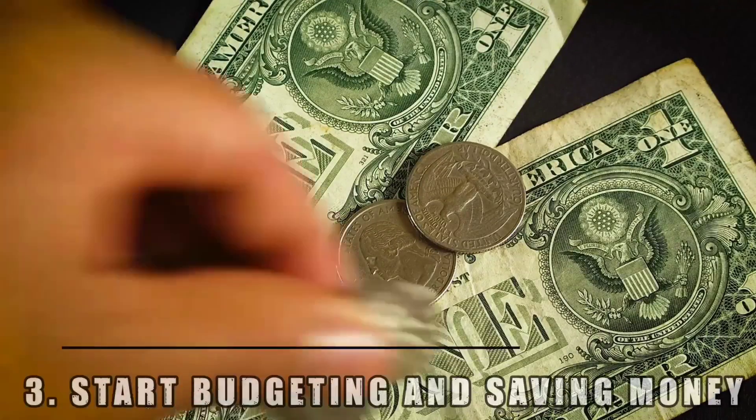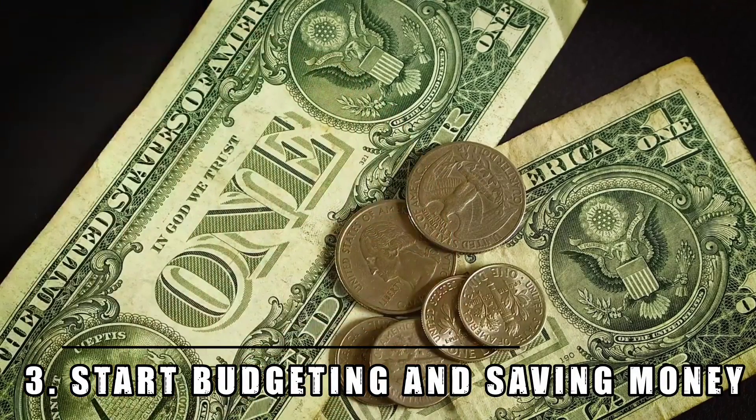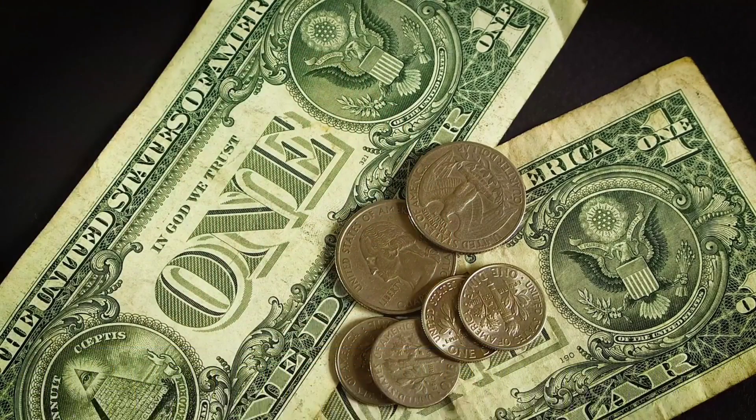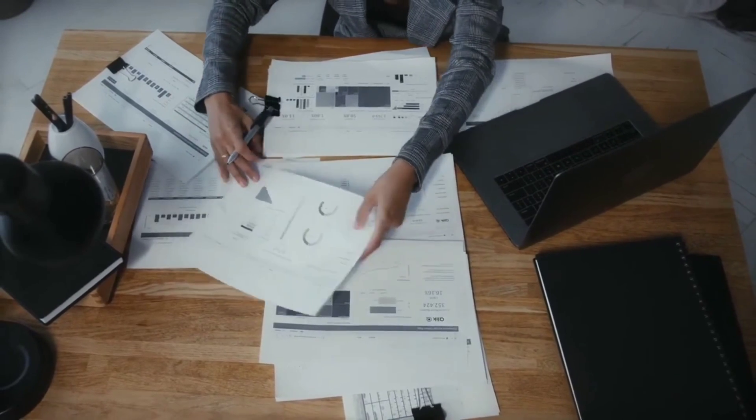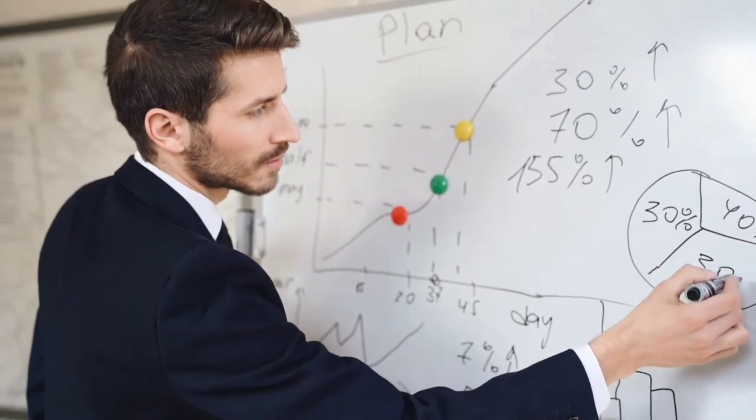3. Start Budgeting and Saving Money. To pay off debt and hit your financial goals, it's important to learn how to manage your money. Follow these steps to implement a basic budgeting plan. Identify costs: write down your income streams and expenses, and calculate how much you make or spend on average for each item on your list.